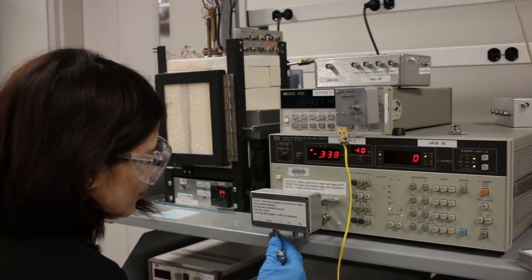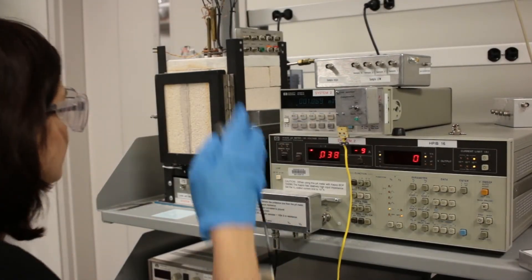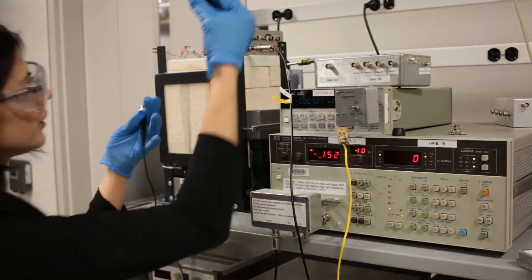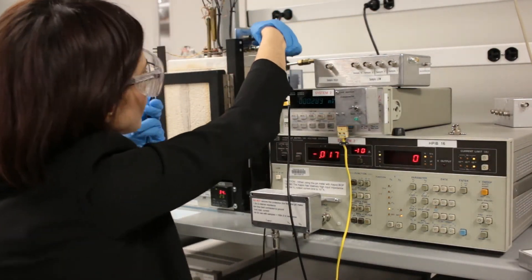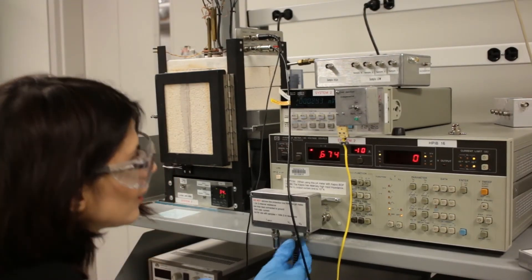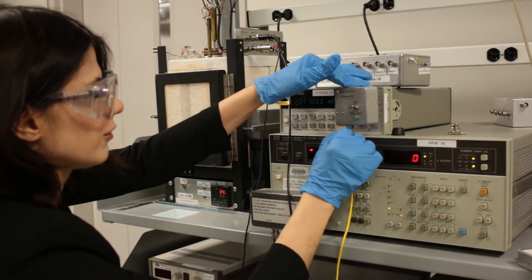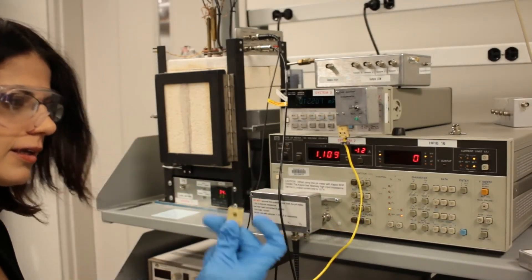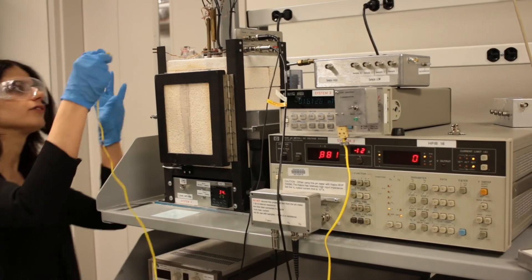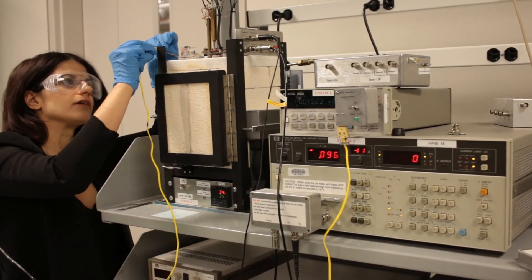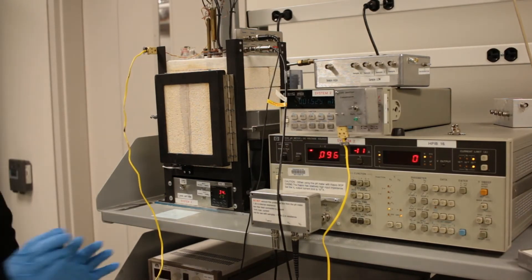Electrical connections from sample to picoammeter are achieved by using BNC and triaxial cables. Here, we are trying to measure ultra-low currents in the picoamp current range. Therefore, we use triaxial cables to minimize leakage current arising from the cable itself. Using triaxial cables instead of BNC counterparts becomes extremely important for TSDC measurement of pyroelectric samples due to the contribution of pyroelectric current to the terminal relaxation current.